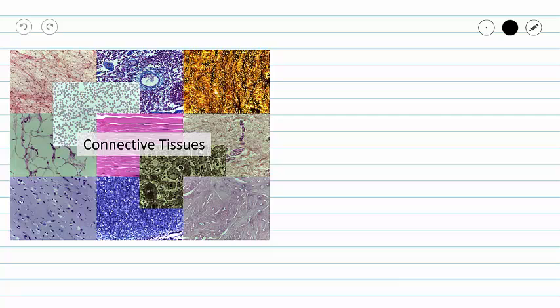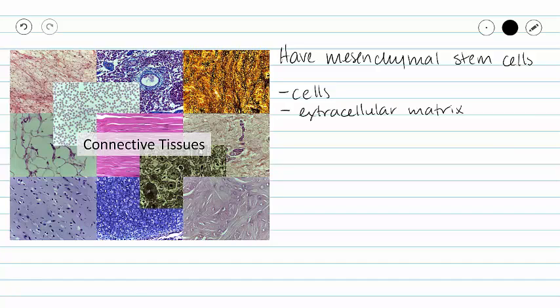All connective tissues have a mesenchymal origin and they all have mesenchymal stem cells. All connective tissues have two major components: cells and extracellular matrix. Our extracellular matrix is composed of two major components. Our first component is called ground substance, which is the fluid component of our extracellular matrix. And then we have extracellular fibers.